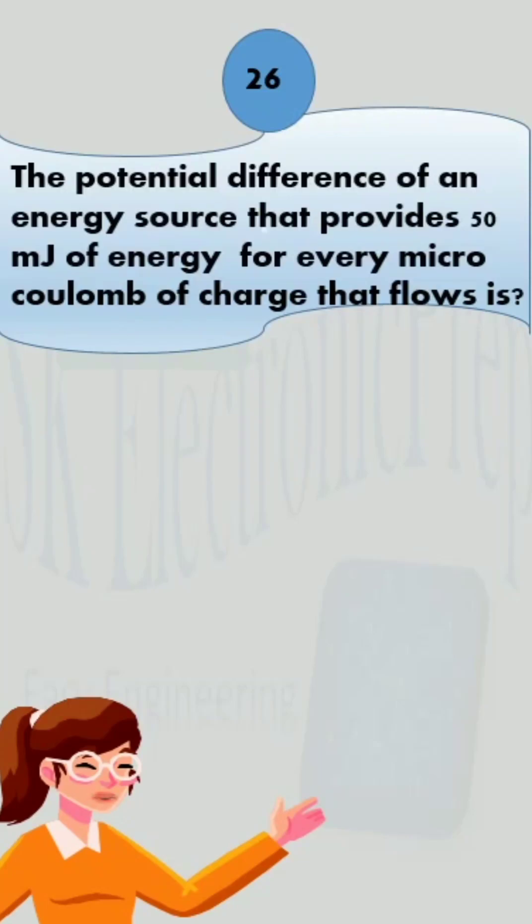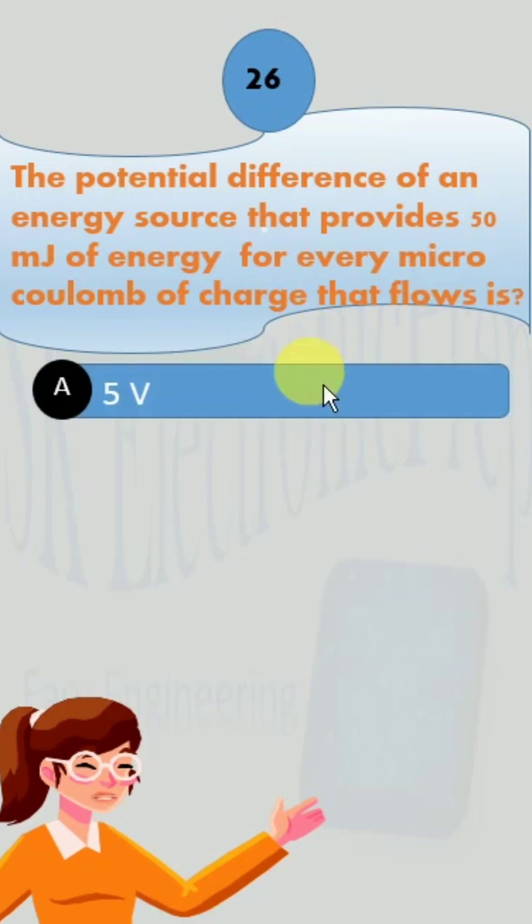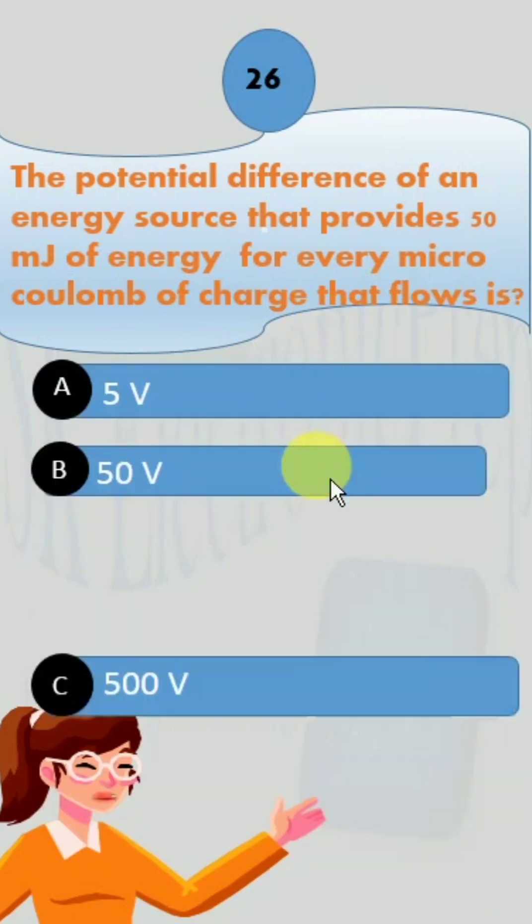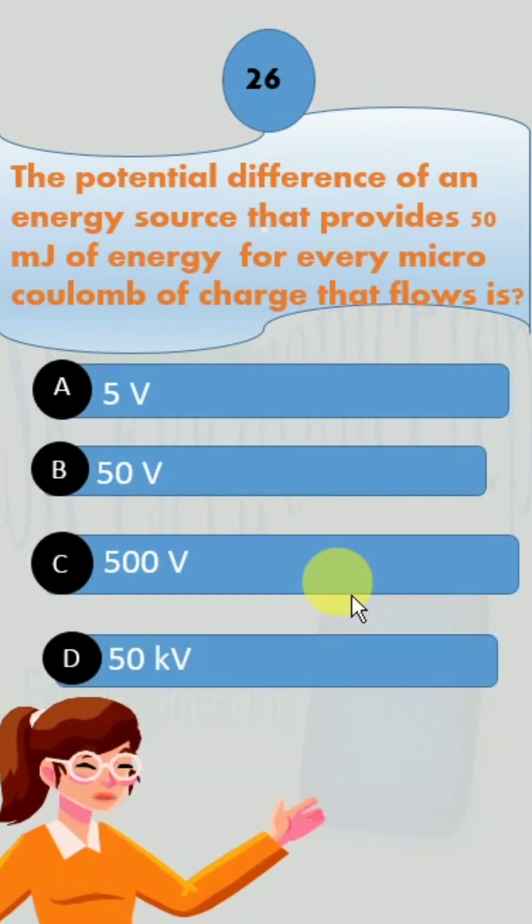The potential difference of an energy source that provides 50 mJ of energy for every microcoulomb of charge that flows is: option A, 5 volts; B, 50 volts; C, 500 volts; and D, 50 kilovolts.